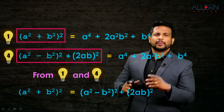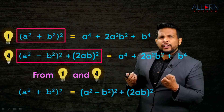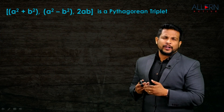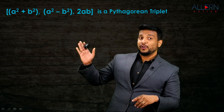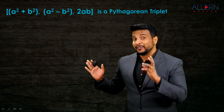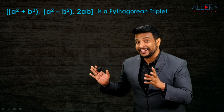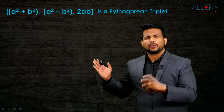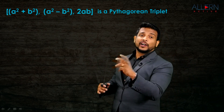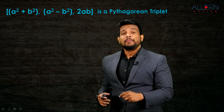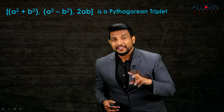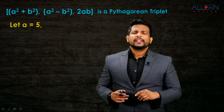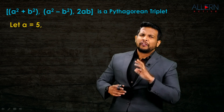So now we have understood the formula. Let's create one Pythagorean triplet on our own. The Pythagorean triplet consists of A²+B², A²-B², and 2AB, where A and B are natural numbers with A greater than B. Let's take A equal to 5.